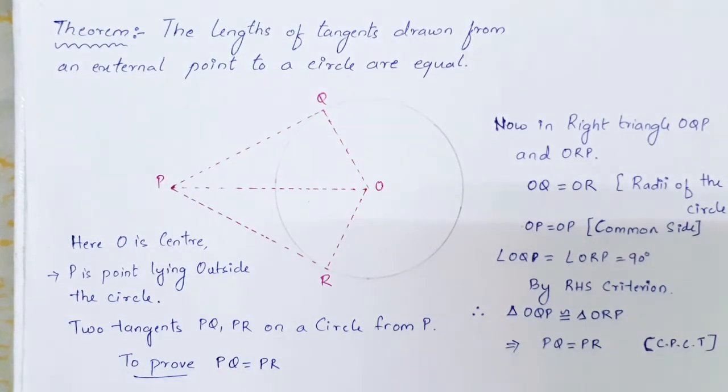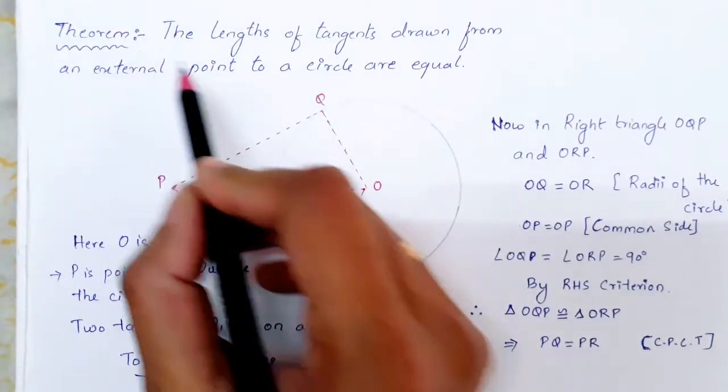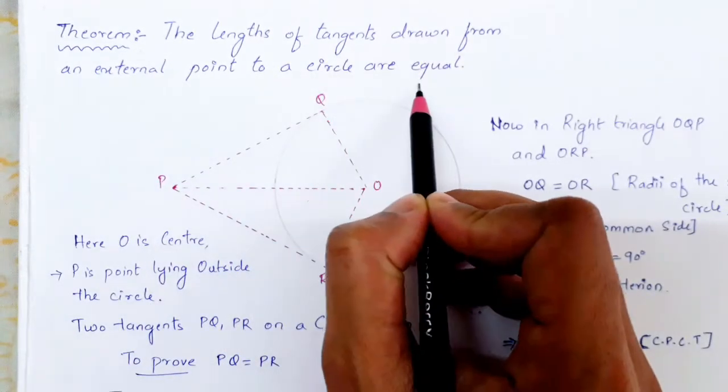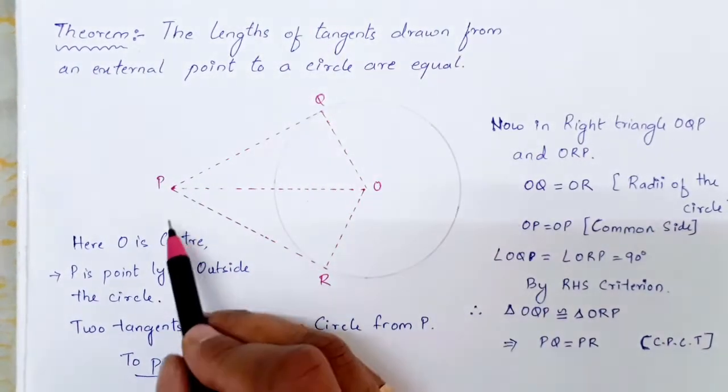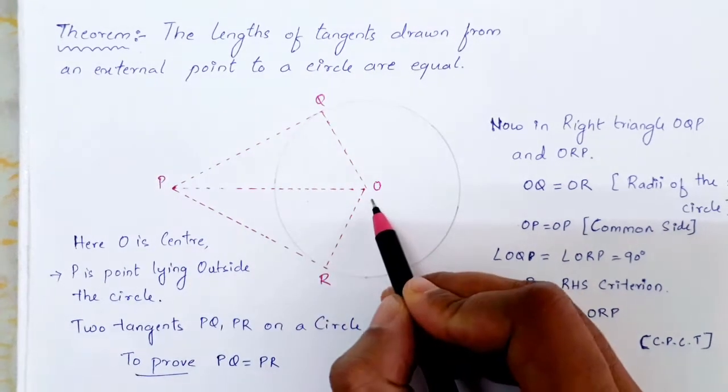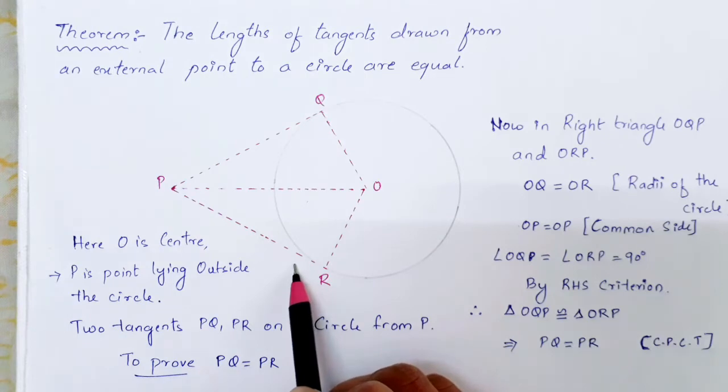Hello everyone, today we're going to prove a very important theorem for math 10th class board. The theorem states that the length of tangents drawn from an external point to a circle are equal. I have a point P which is outside the circle, and O is the center. PQ and PR are tangents of the circle.